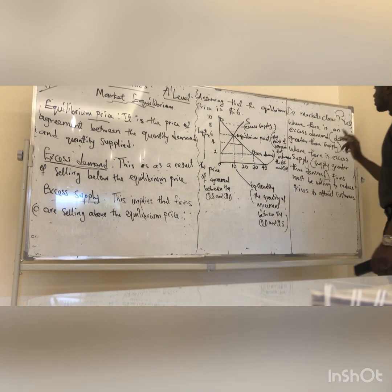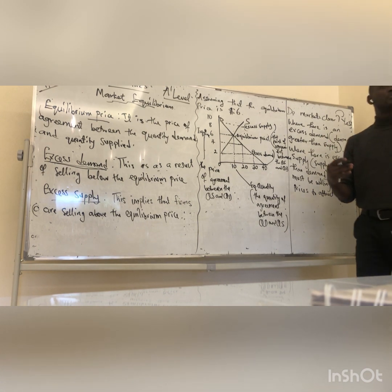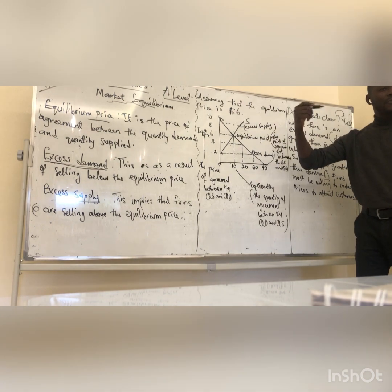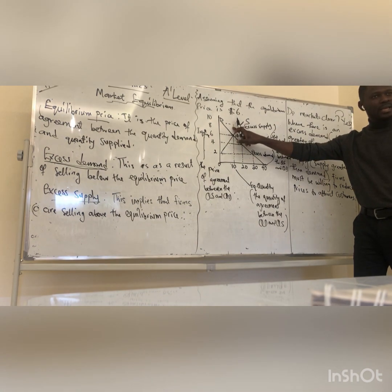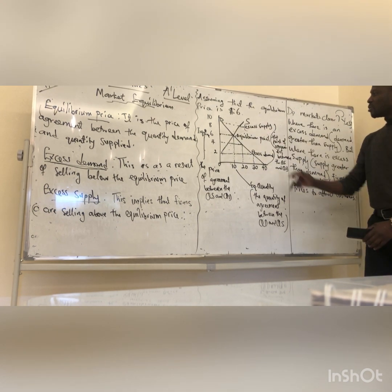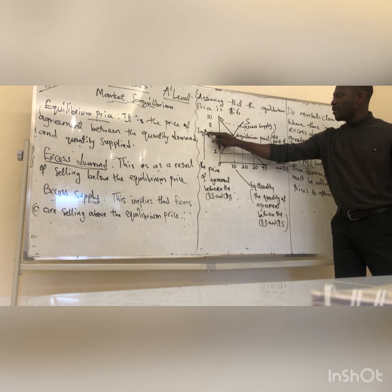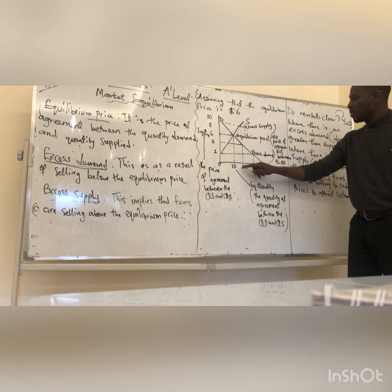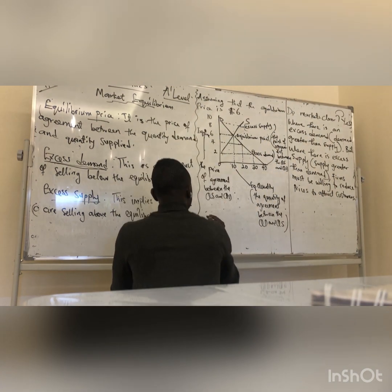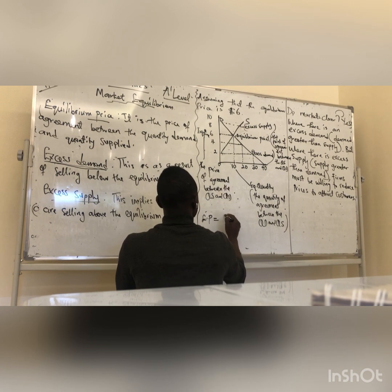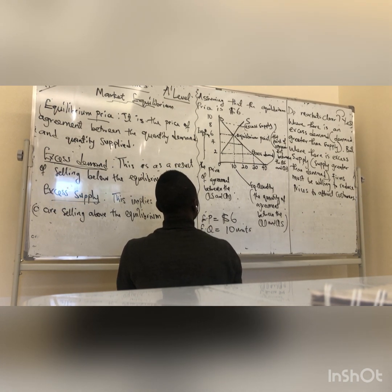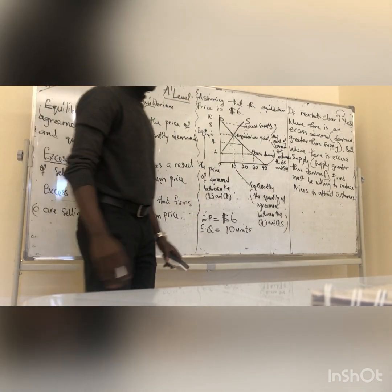The market will clear if there is excess demand. But when there is excess supply, firms should be willing to reduce their price to attract customers. Remember: excess supply occurs when firms sell above the equilibrium price; excess demand occurs when firms sell below the equilibrium price. The equilibrium point is the point of agreement between quantity demanded and quantity supplied. The equilibrium price is the price of agreement, and the equilibrium quantity is the quantity of agreement. Here, our equilibrium price is $6 and the equilibrium quantity is 10 units.